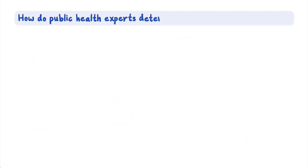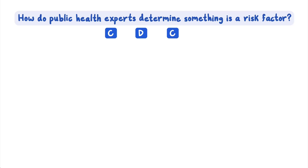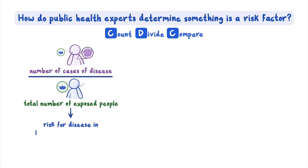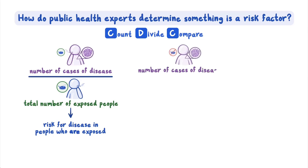How do public health experts determine something is a risk factor for a disease? They use math — specifically, they count, divide, and compare. An easy way to remember this is to think CDC: count, divide, compare. First, they count the number of cases of disease and divide it by the total number of exposed people. This is the risk for disease in people who are exposed — for example, the risk for lung cancer among smokers. Then, they do the same calculation for the non-exposed people.